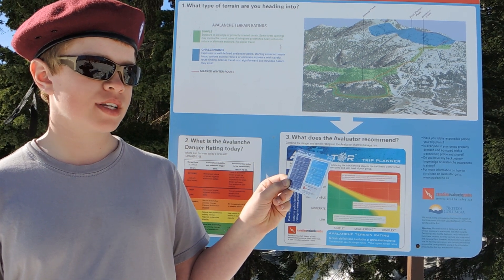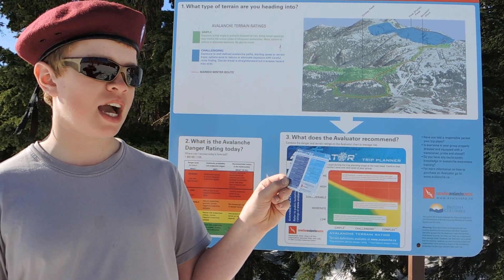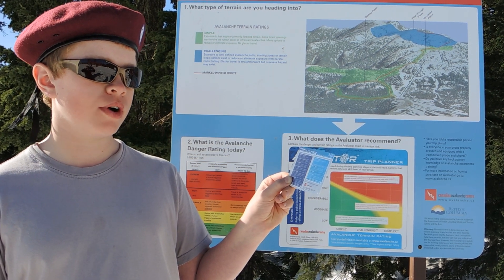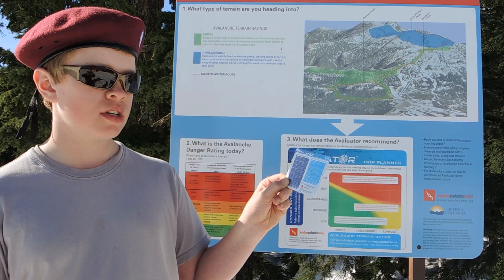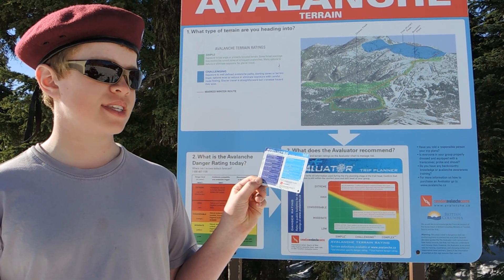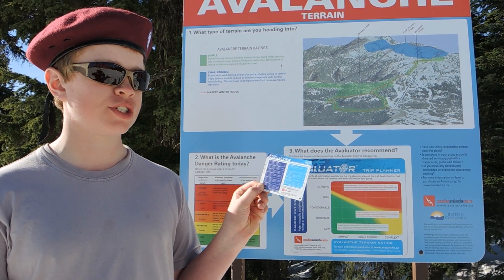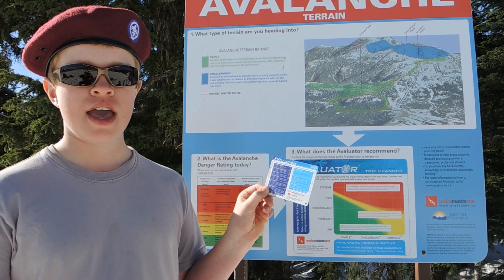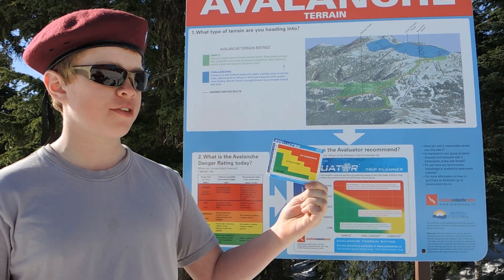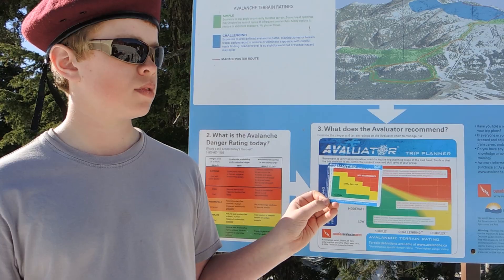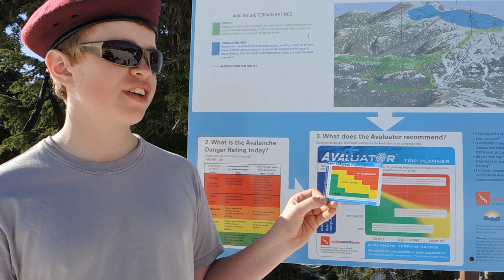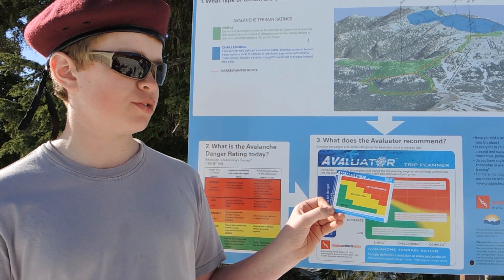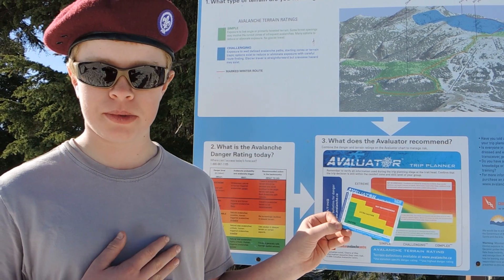Question number four: forest and aspect — is the slope in the alpine, in a sparsely treed area, or an open forest? Now, all we have to do is take our score from the avalanche condition questions and our score from the terrain characteristic questions, and put them on this chart on the front of the card. Where the two scores meet on the evaluator chart gives us the evaluator trip planner risk assessment for our trip.